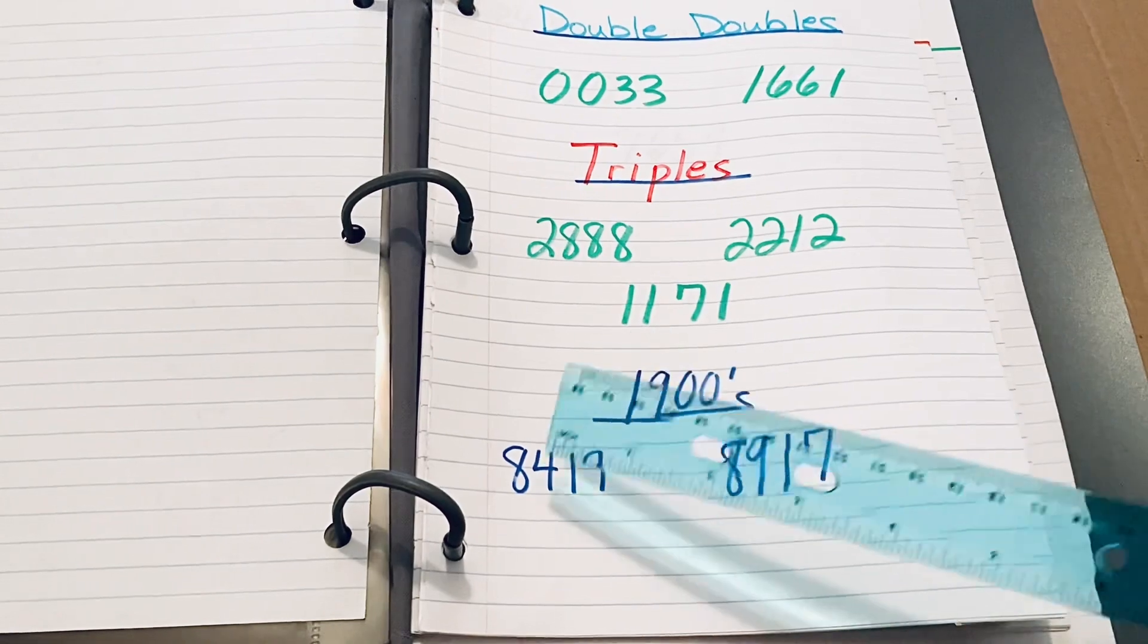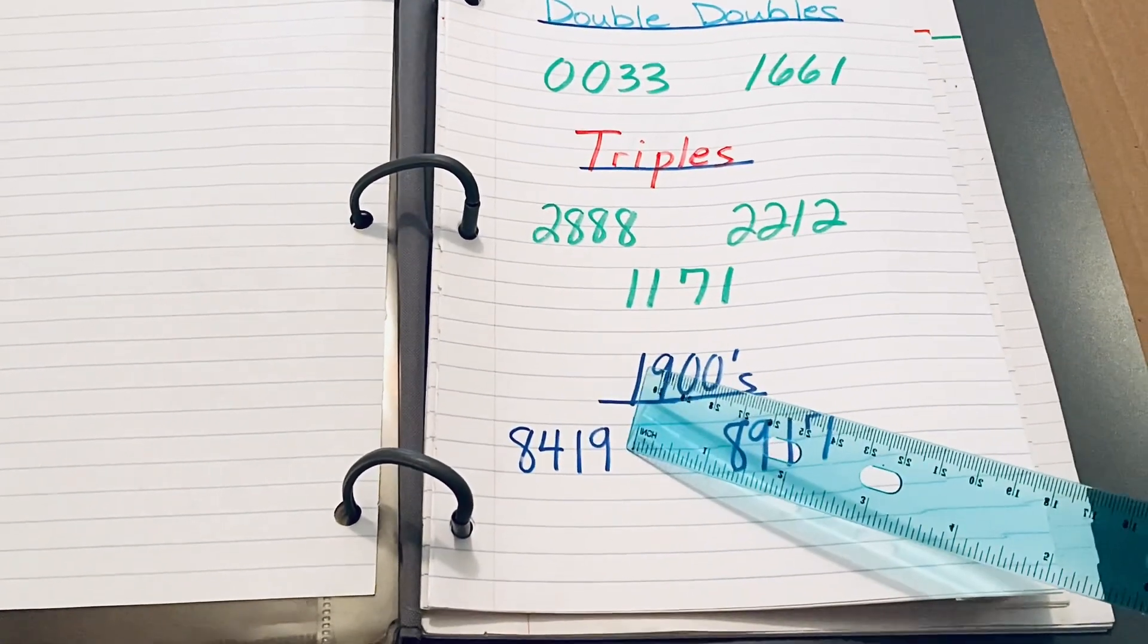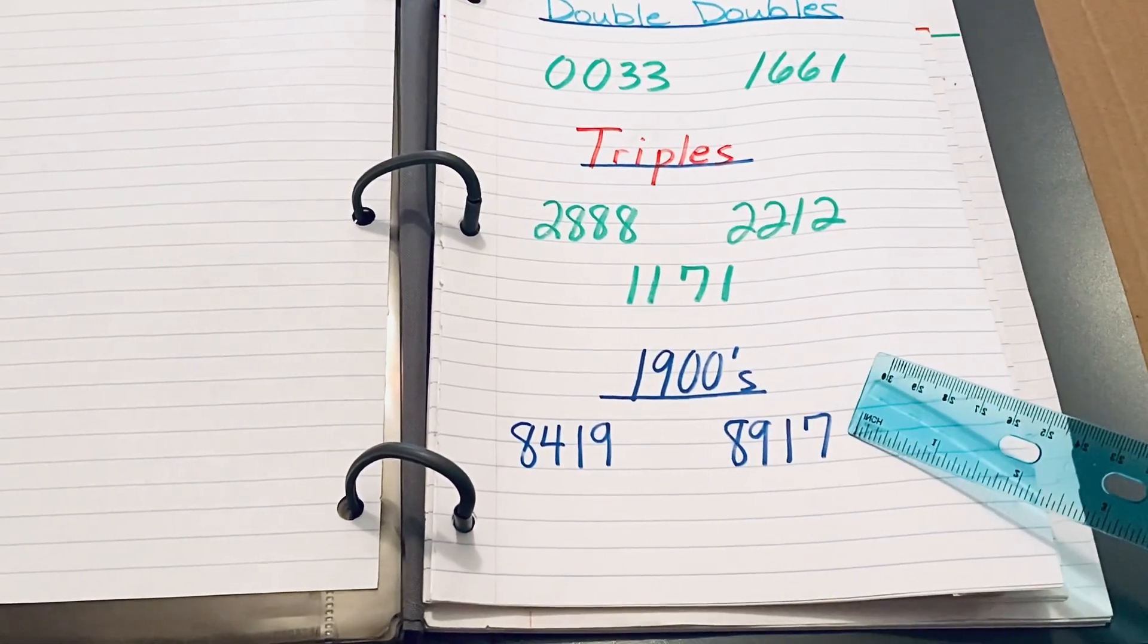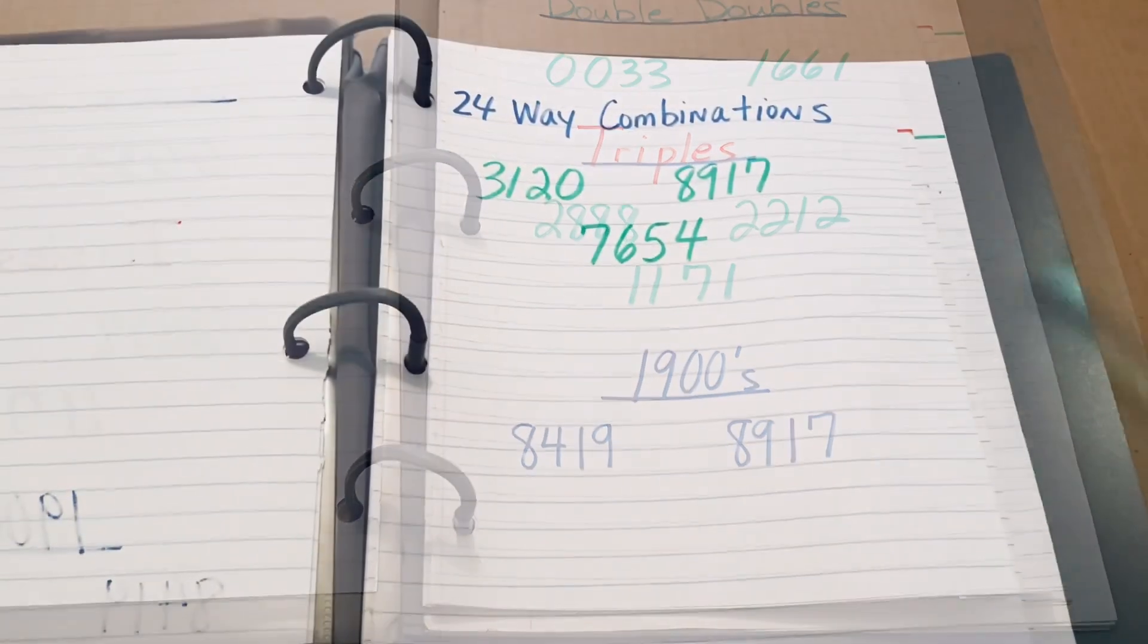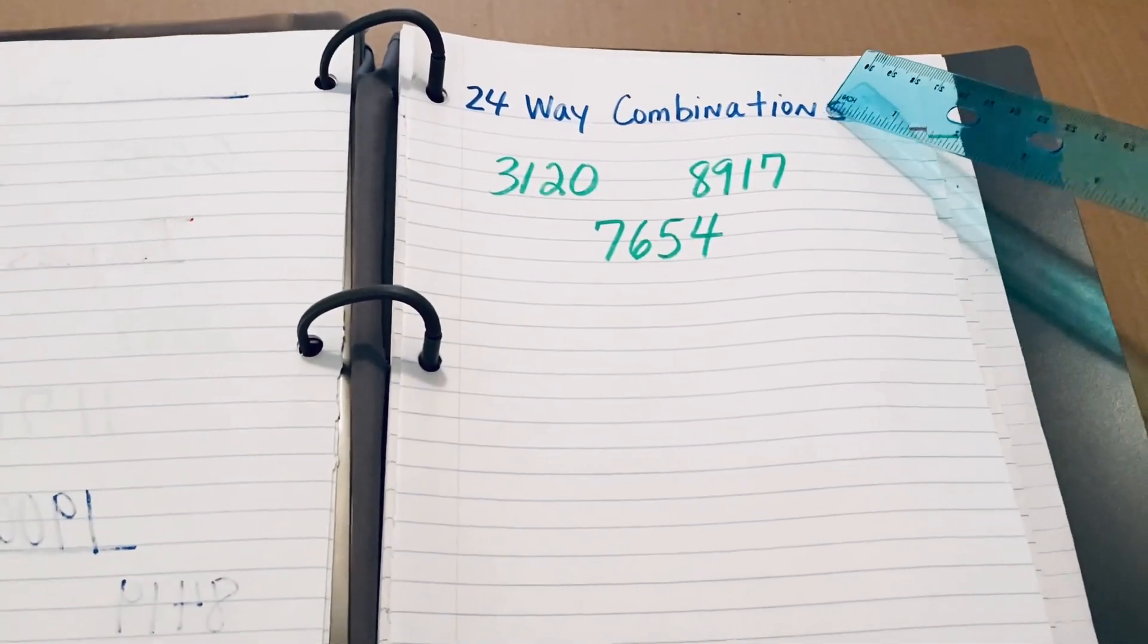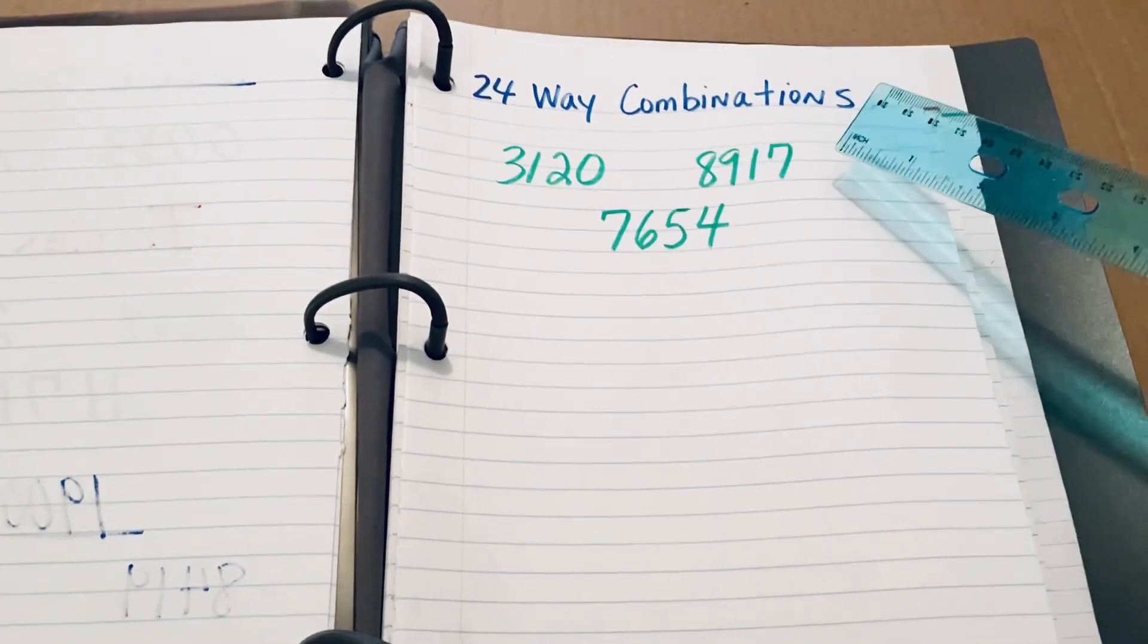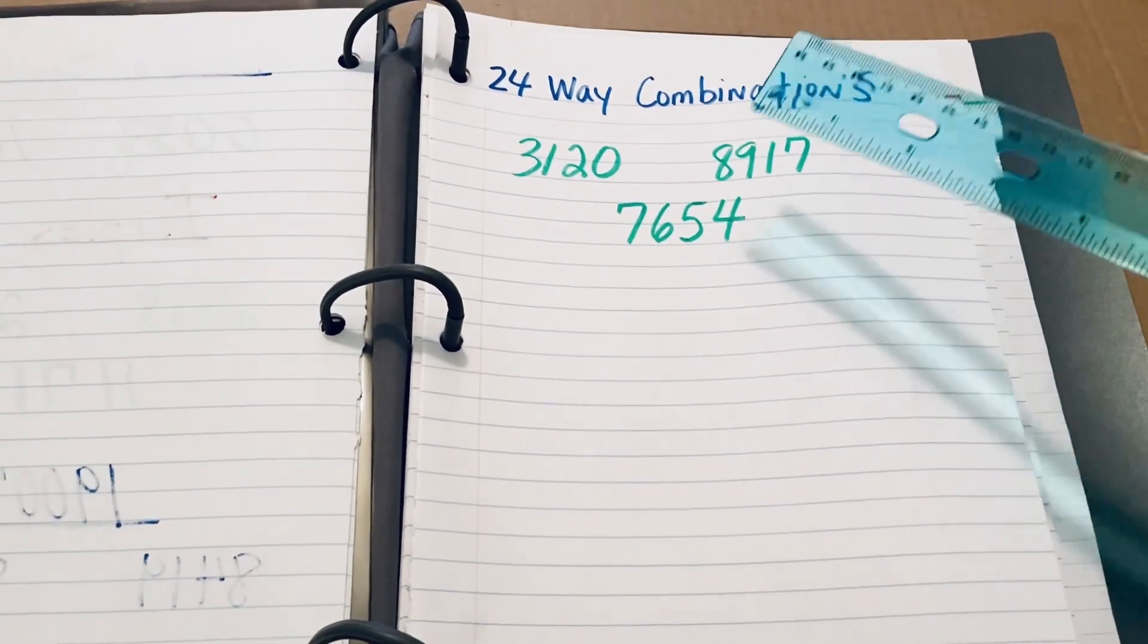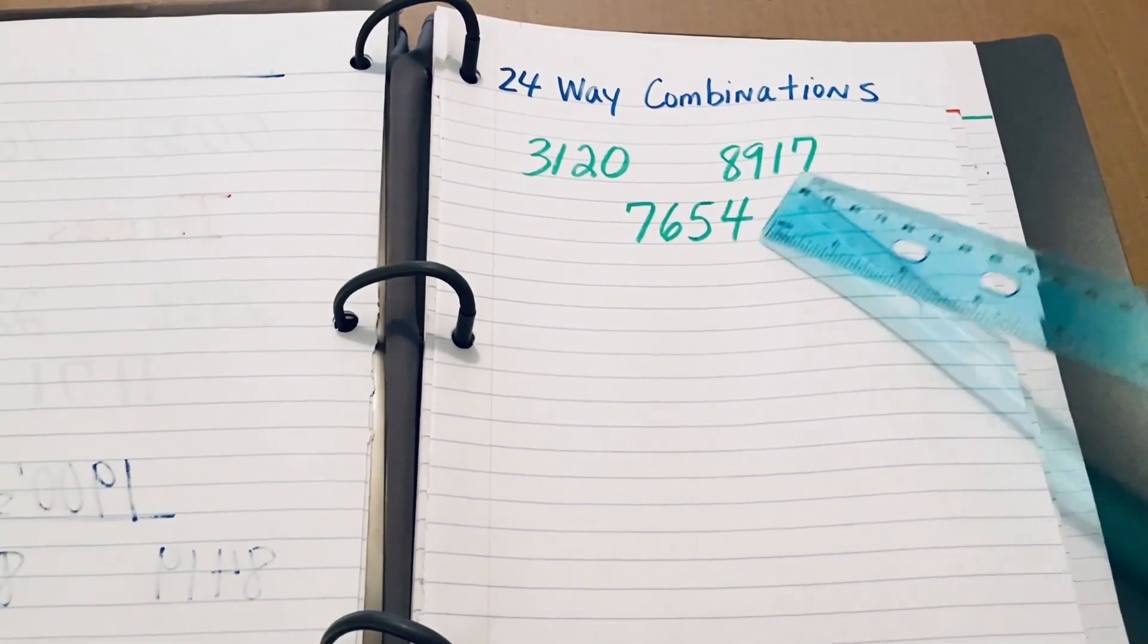For those of you that like to play the Pick 4 numbers that have 19, I have 8419 and 8917. And here are your 24-way combination numbers for this week, 3120, 8917, and 7654.